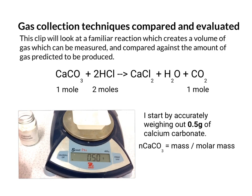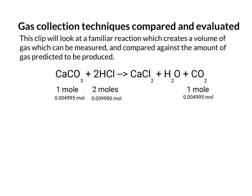So I know that the moles of calcium carbonate will be mass over molar mass which is 0.5 grams over 100.1 grams per mole which equals 0.004995 moles. So this now allows me to predict how many moles of HCl I need and therefore how many moles of carbon dioxide I'd expect to make.